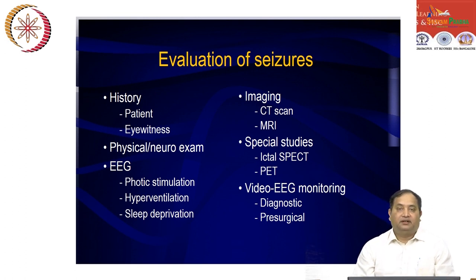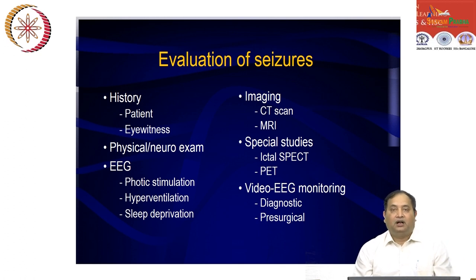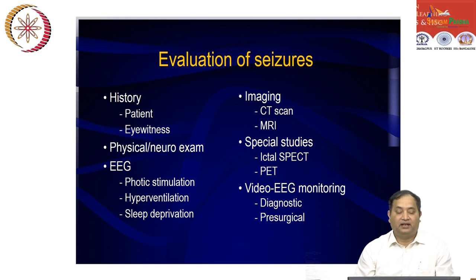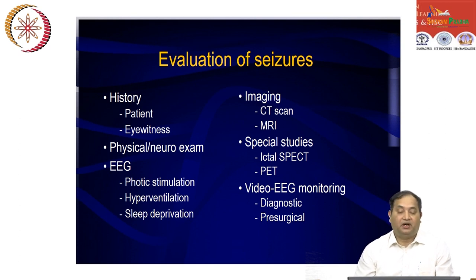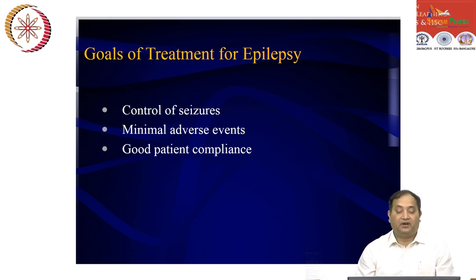Before deciding on pharmacological therapy, you take a detailed history of the seizure. Nowadays, mobile phones can record the seizure so a clinician can evaluate what kind of seizure it is, making it easier to start drug therapy. Investigations include clinical and neurological examinations, EEG with photic stimulation or hyperventilation, imaging techniques, PET scan, or video EEG recording to evaluate etiological and pathological factors.